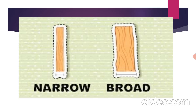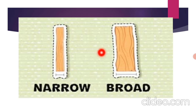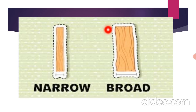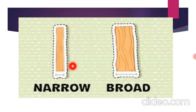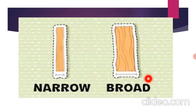Let me explain. Narrow means small — as you can see, narrow means small in size. This is narrow. Broad means wide, big — as you can see, this wooden plank is broad. The small, thin plank is called narrow, while the wide plank is called broad.